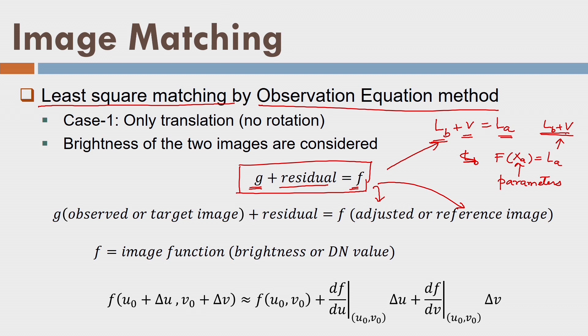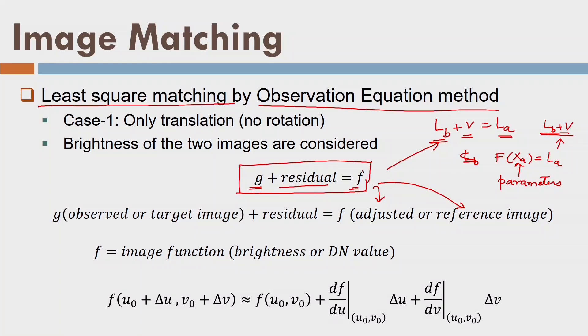Now we correlate image matching with the observation equation method. We write F(X, A) = L_A where X is the parameters, and L_A = L_B + V. F is the image function and G is the observed image — both G and F are functions. At a given (x, y) location of a pixel, there is some intensity value, and that intensity value is function F. I can imagine there is a surface representing the pixel value or digital number of the image. I assume that function F is a continuous function, and similarly function G is also a continuous function — they are functions of (x, y) with a value at each (x, y).